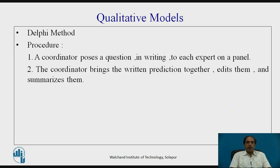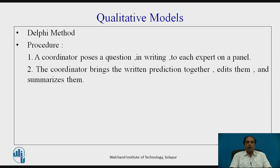The first qualitative method is the Delphi technique. It is a judgmental forecasting technique where a coordinator poses a question in writing to each expert on a panel. The coordinator brings the written predictions together, edits and summarizes them. A team of experts from various organizations and sectors, including customer organizations, are involved in this process.